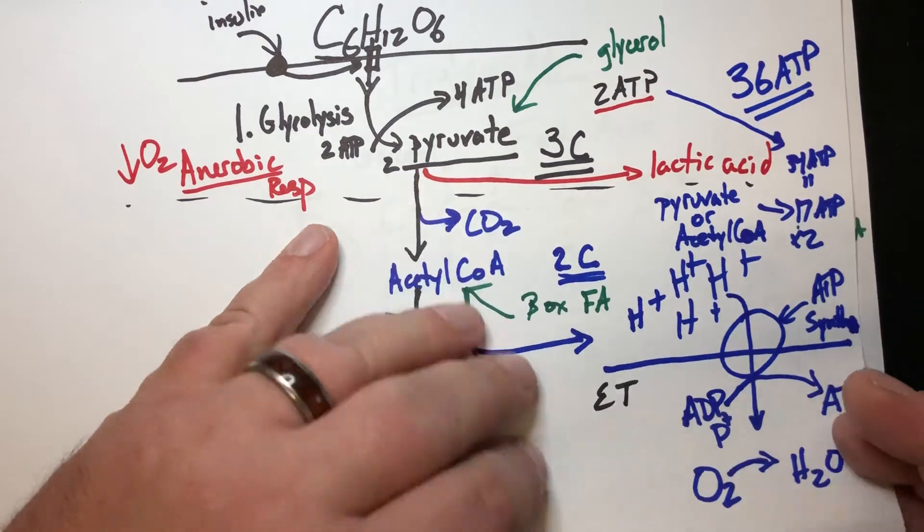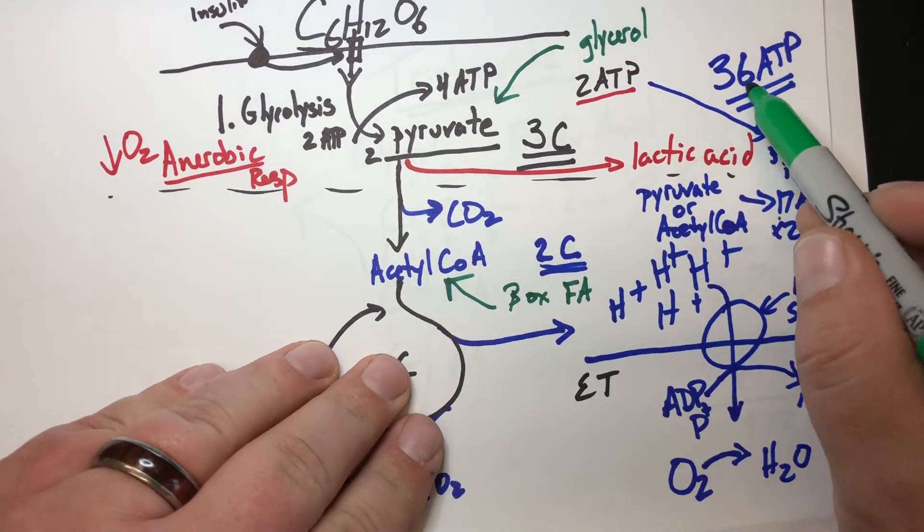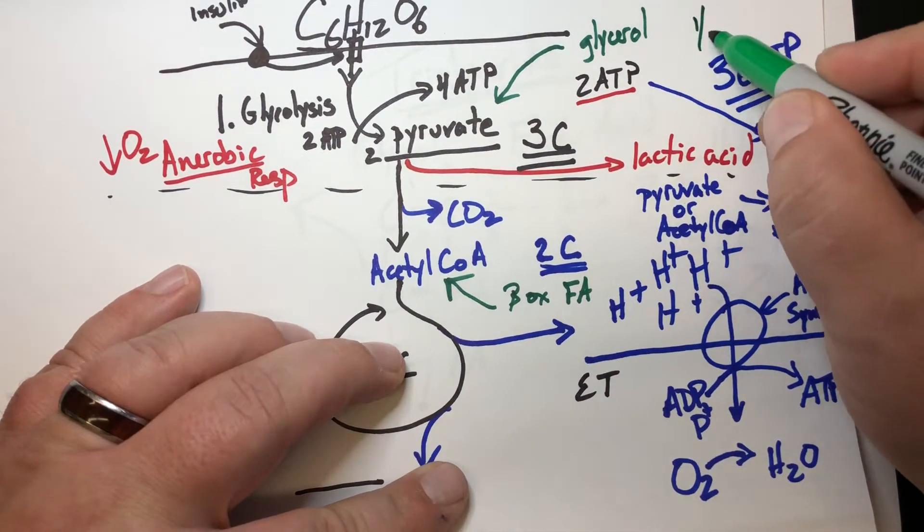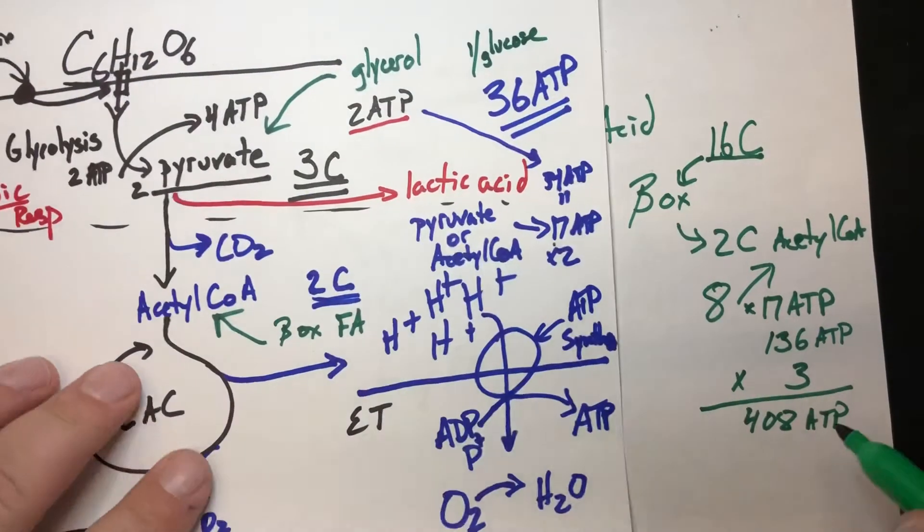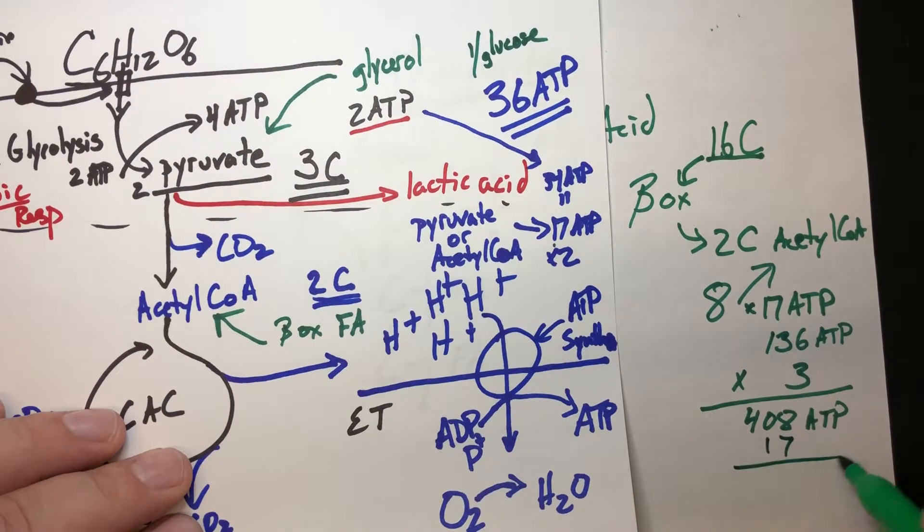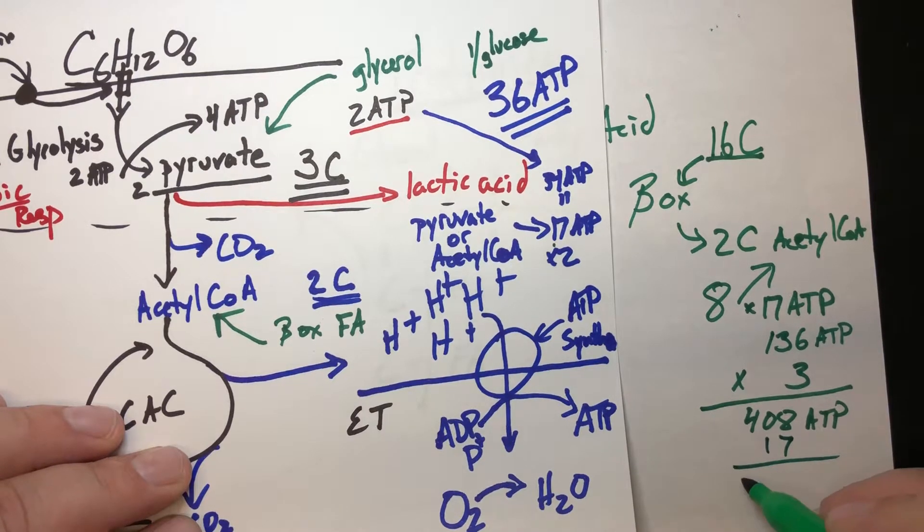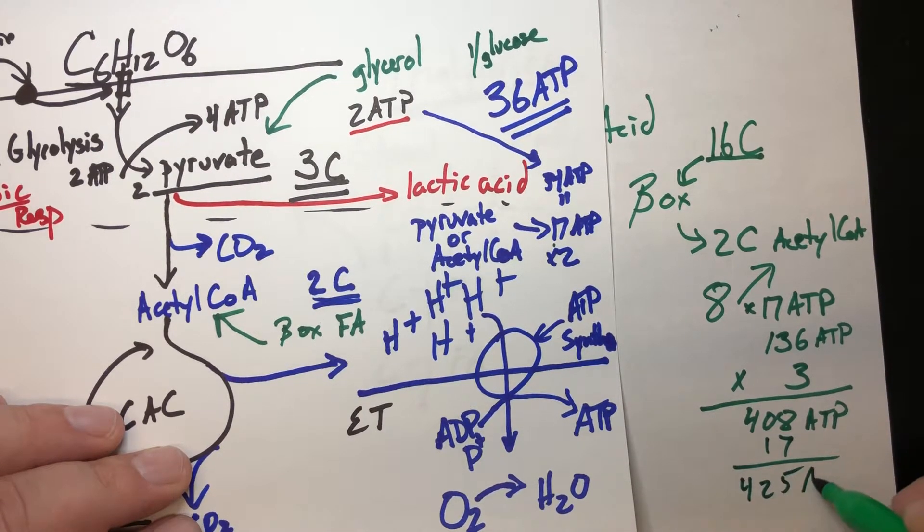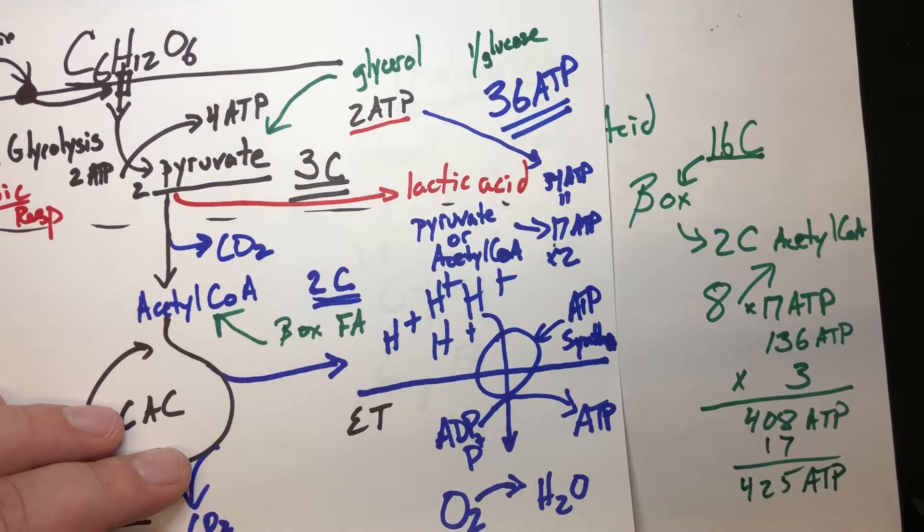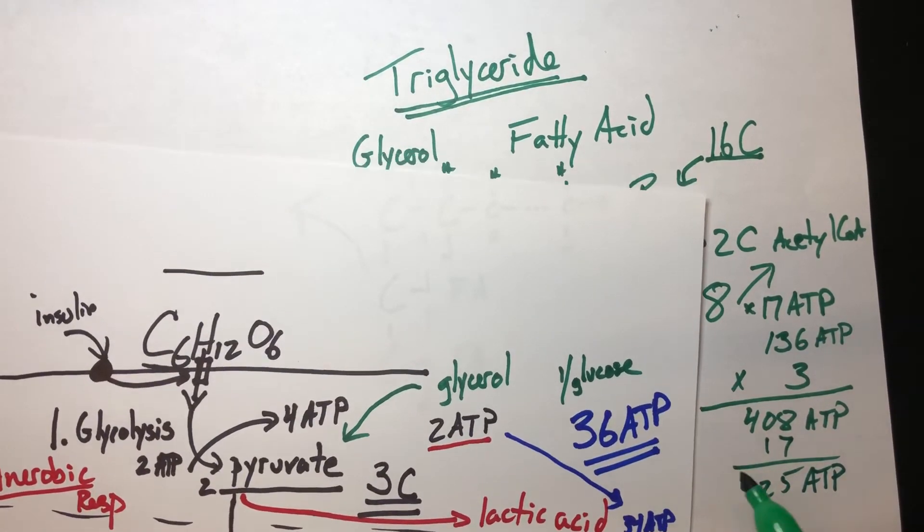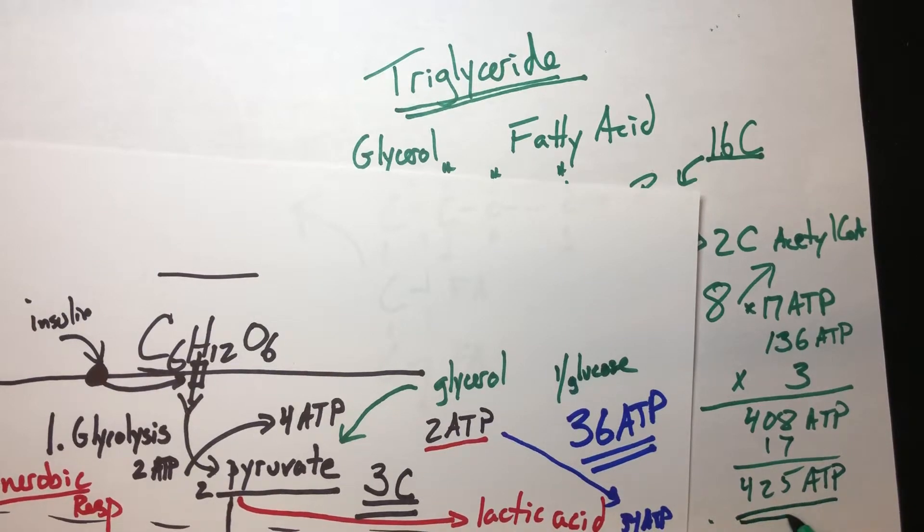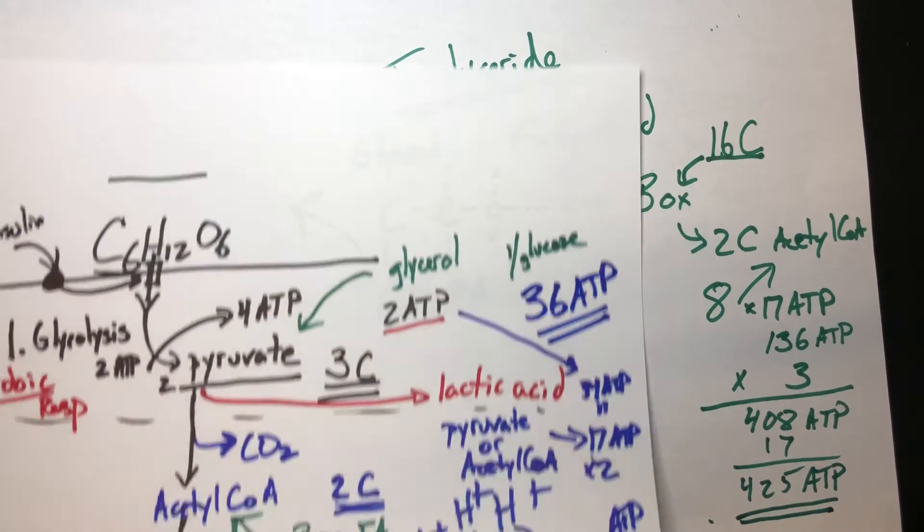So comparatively, when you look at the 36 ATP from one glucose during aerobic respiration, compare that to, so I had 17 here from the glycerol, looking at like 425 ATP from one triglyceride. I mean, those numbers are kind of incomparable. There's so much more production when we metabolize those fatty acids.